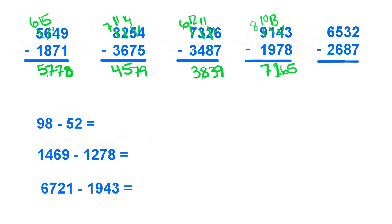Over here, 2 minus 7, need to borrow from the 3, make that a 2, make that a 12. 12 minus 7 is 5. 2 minus 8, can't do that, borrow from the 5, make that a 4. 12 minus 8 is 4.